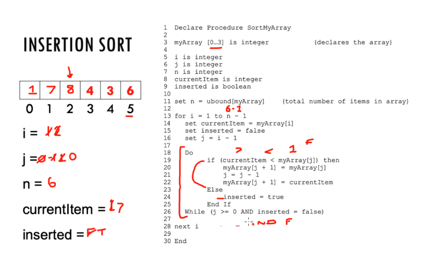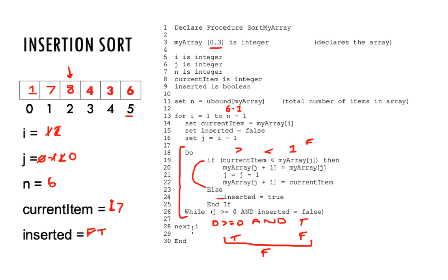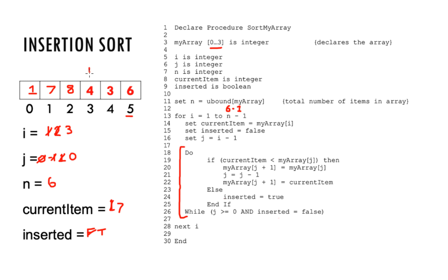We increment i to three and go back to line 13. Inside the for loop, current item is set to array[3], which is four. Inserted is set to false, and j is set to i minus one, which is two. We evaluate the do-while condition: j is two (≥0, true) and inserted equals false (true). Both pass. In the selection statement: if current item (four) is less than array[j] which is eight — true. So array[j+1] — position three — gets the value eight. j is decremented from two to one, and array[j+1] — position two — is given the value four.